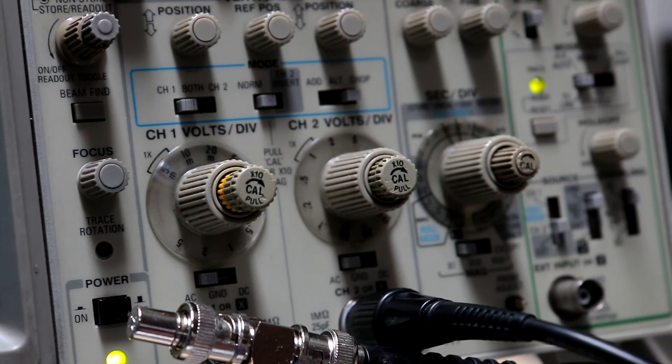One thing to note with this scope: if we pull out the cal handle it gives us a x10 mag on the vertical scale and that gives us 500 microvolts per division, which is useful for examining those very small signals, measuring noise from power supplies and stuff. But when you do that it does limit the bandwidth.